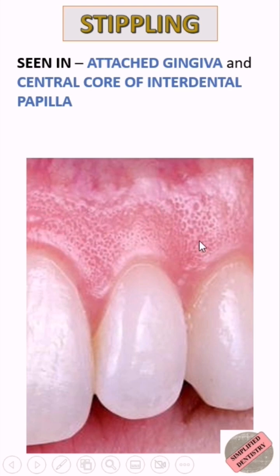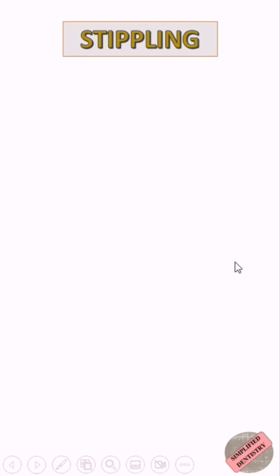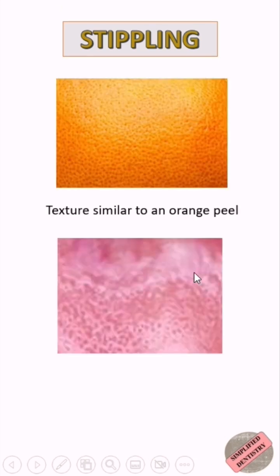Stippling is seen in the attached gingiva and the central core of the interdental papilla, and is absent in the marginal gingiva. The texture is similar to that of an orange peel — it is said to have an orange peel-like structure.